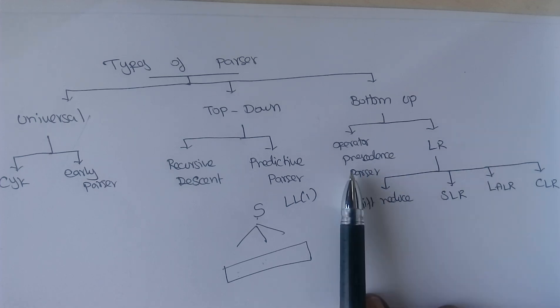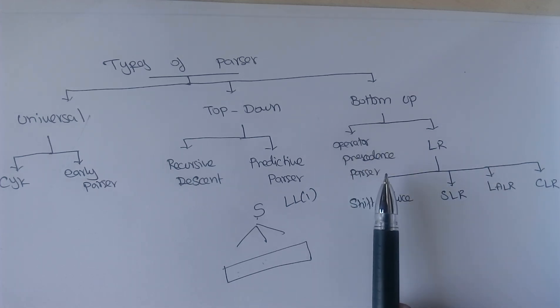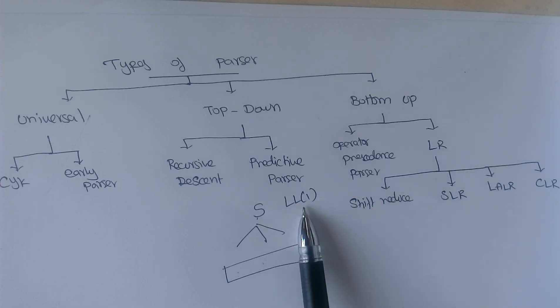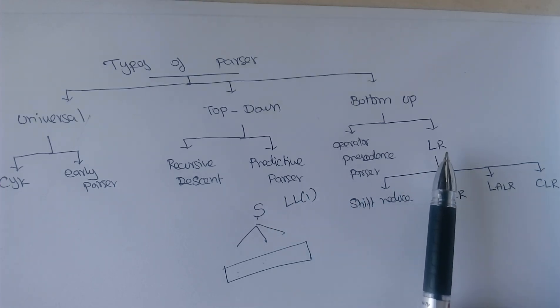And here we have operator precedence and LR parser. Operator precedence is a special kind of parser where we are going to check the precedence of operator and do parsing. And this LR is like the case of LL1. So here LR actually denotes we are going to scan the input from left to right. And we are going to use rightmost derivation in reverse order. So that is LR parser.